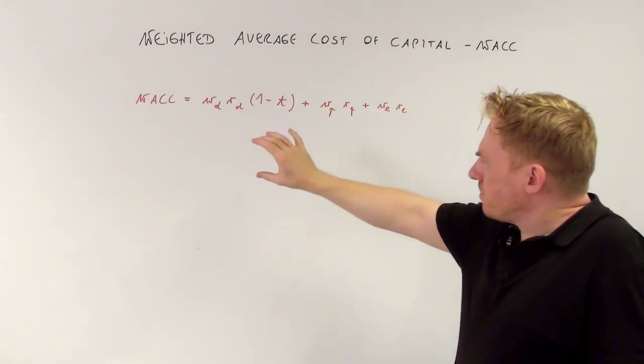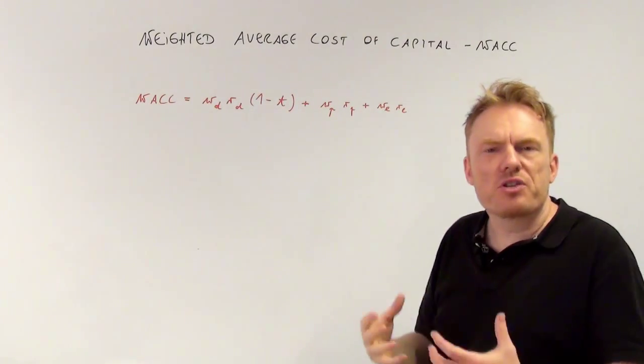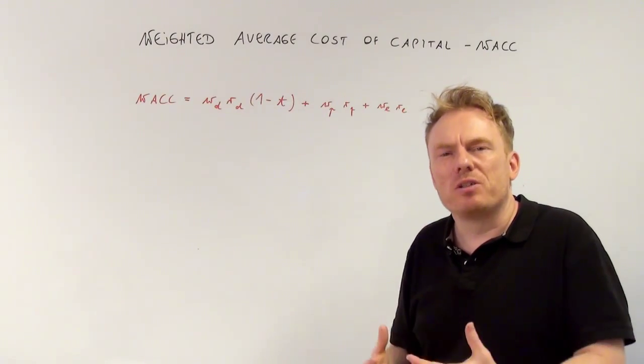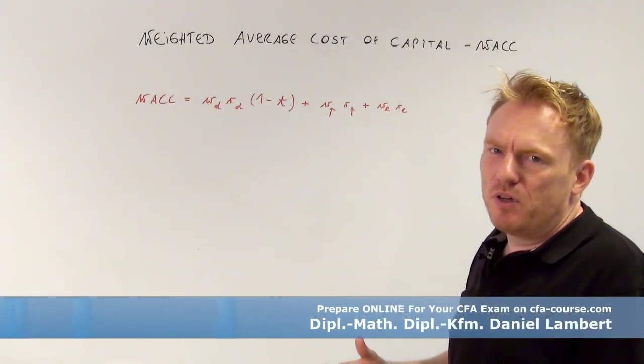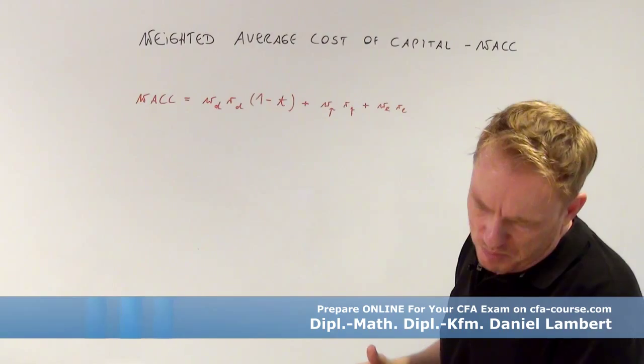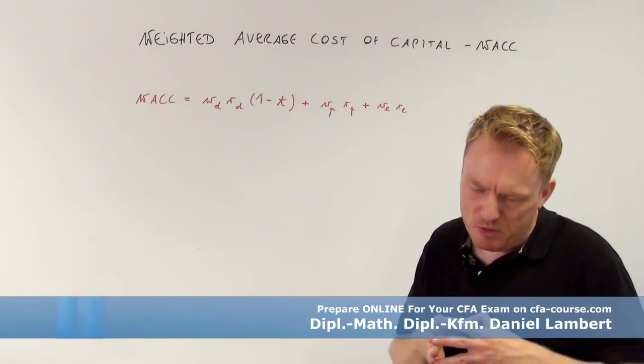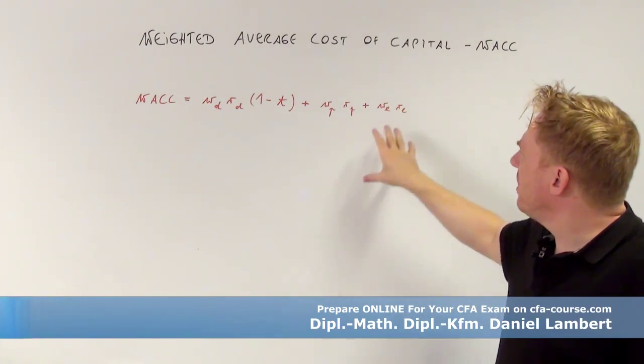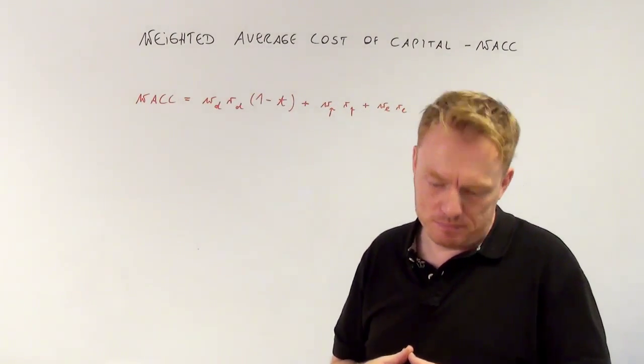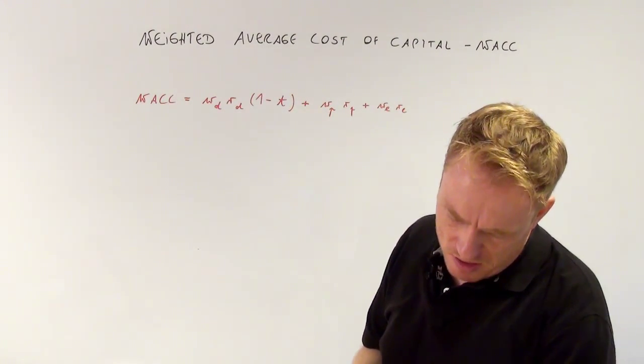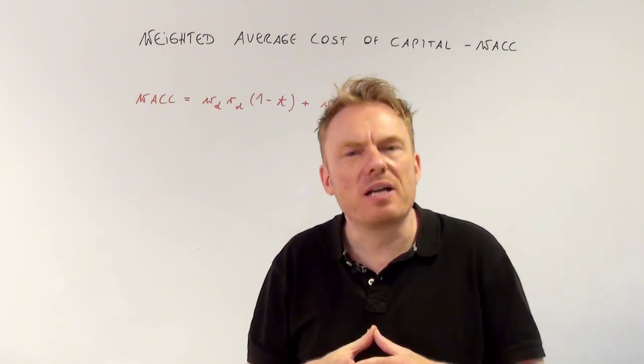So here we have the proportion of money coming from bondholders. Then we have the proportion of preferred stock the company uses. And we have the proportion of equity. Equity times the marginal cost of equity.